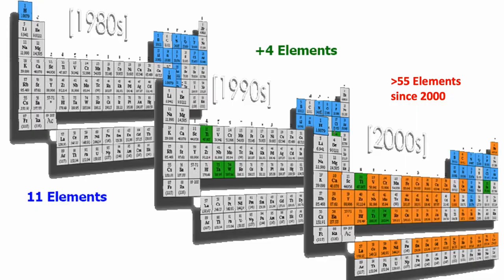A single microprocessor now includes more transistors than the total number of people on Earth. As devices got smaller, many materials reached their scaling limit by the late '90s, and new materials had to be designed and developed. I have measured nearly 80 of the 92 naturally occurring elements.